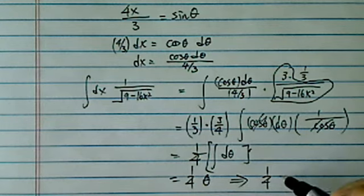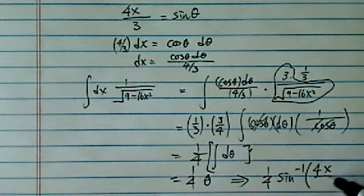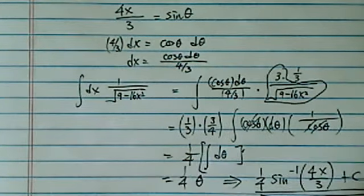And writing in our theta, I can have a sine inverse of—what do I have? Sine inverse of 4x over 3. Let's put our integration constant over there. All right, so that's the final answer.